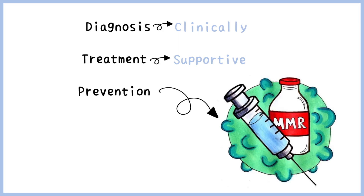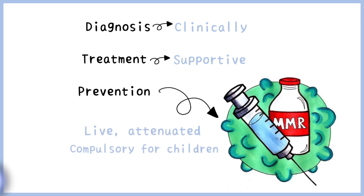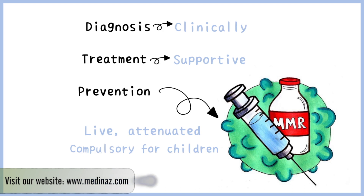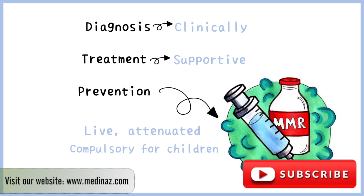Measles is prevented by the administration of the MMR, or Measles Mumps Rubella vaccine, which is a live attenuated vaccination that is compulsory for all children. I hope this video helps you remember everything important about Measles.